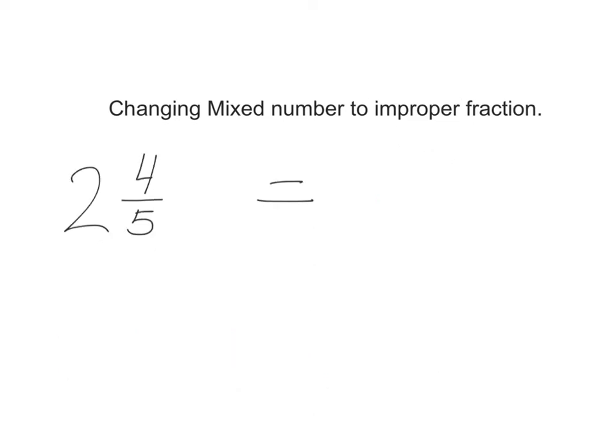So for this next one here, 2 and 4 fifths, try to change it to an improper fraction. Use the strategy, get a piece of paper or a whiteboard, and draw a picture to represent 2 and 4 fifths. You should pause the video now and go ahead and do so. When you come back, it will be done for you so you can check. I am about to show you what's going to happen, so if you haven't paused it yet, do so now.